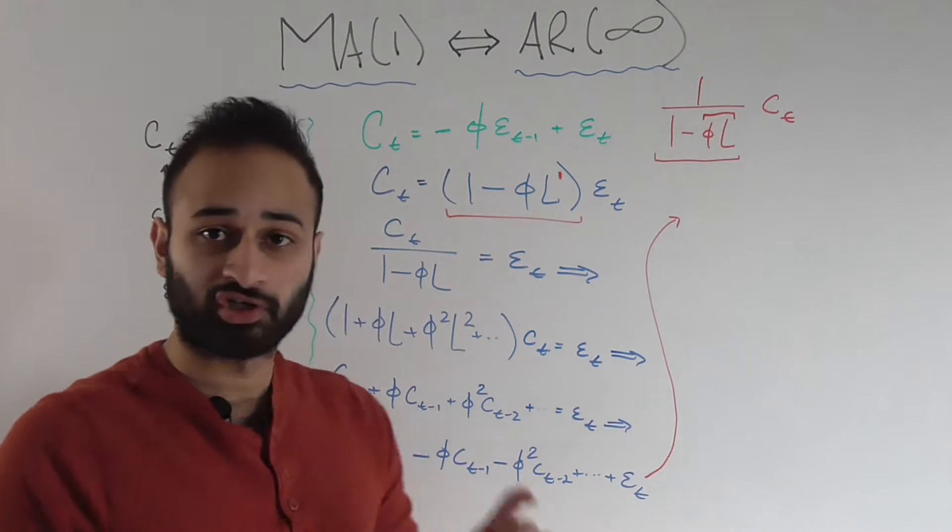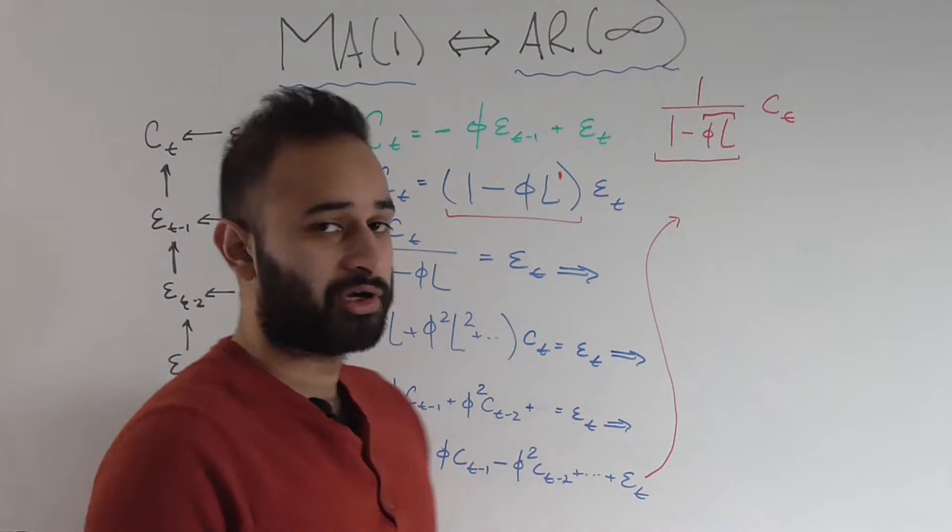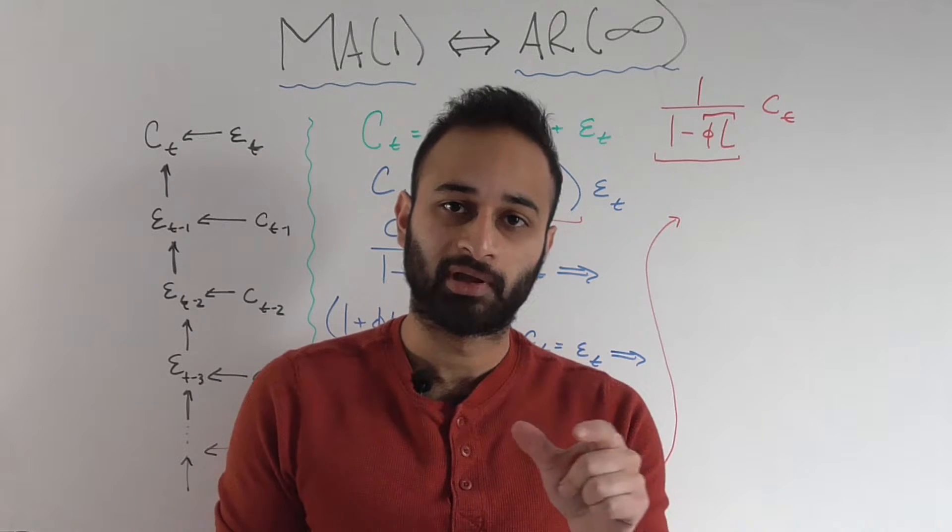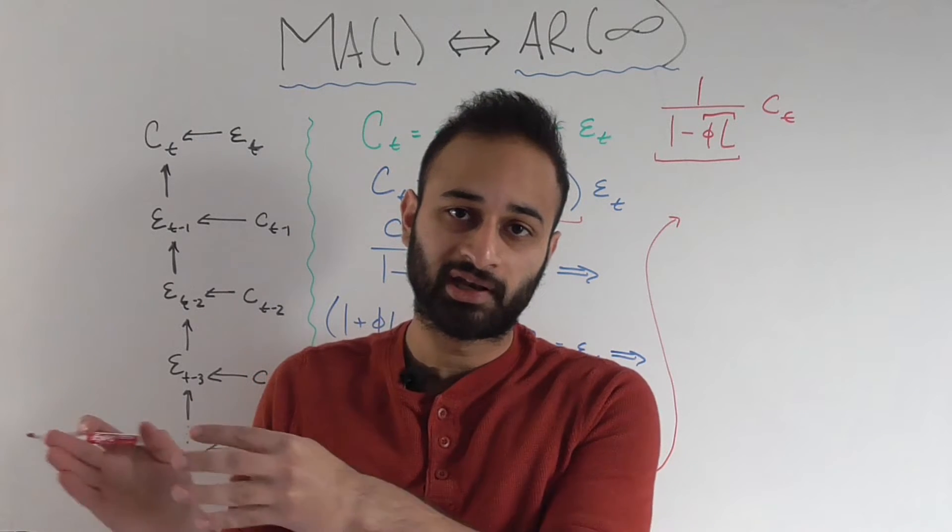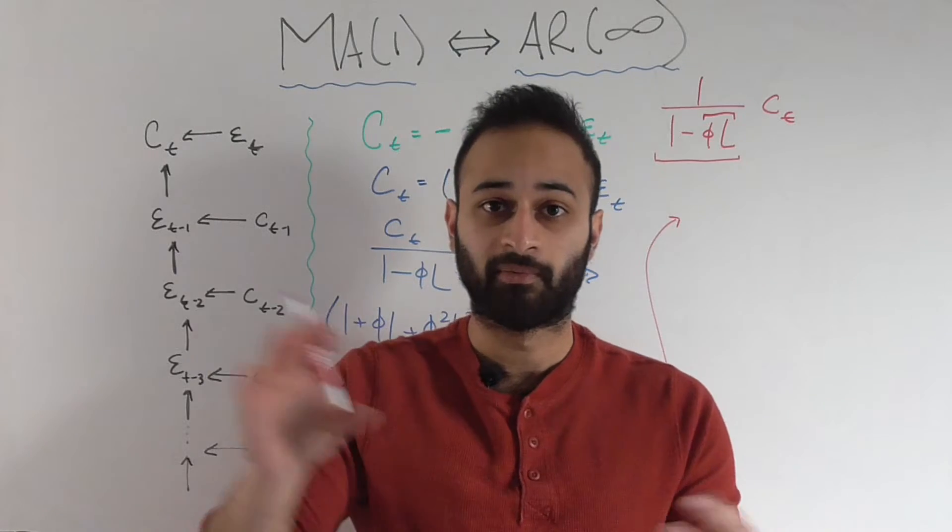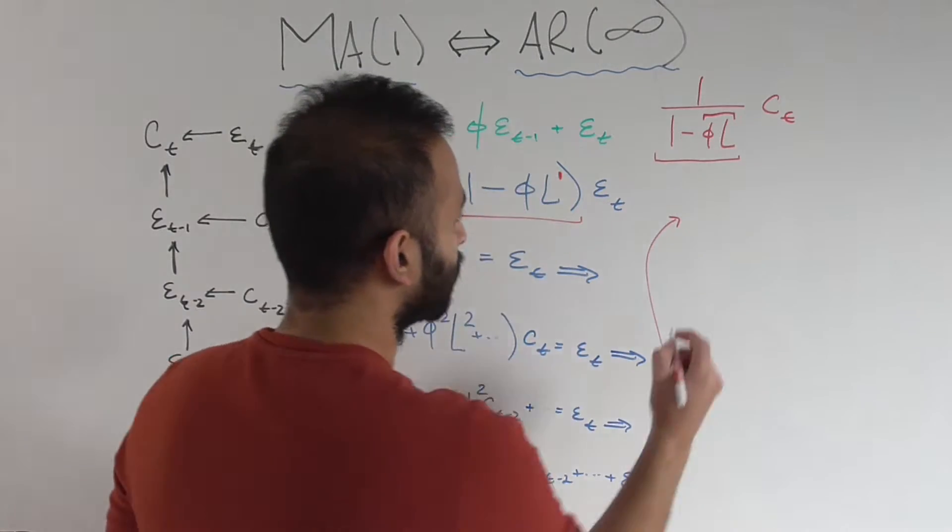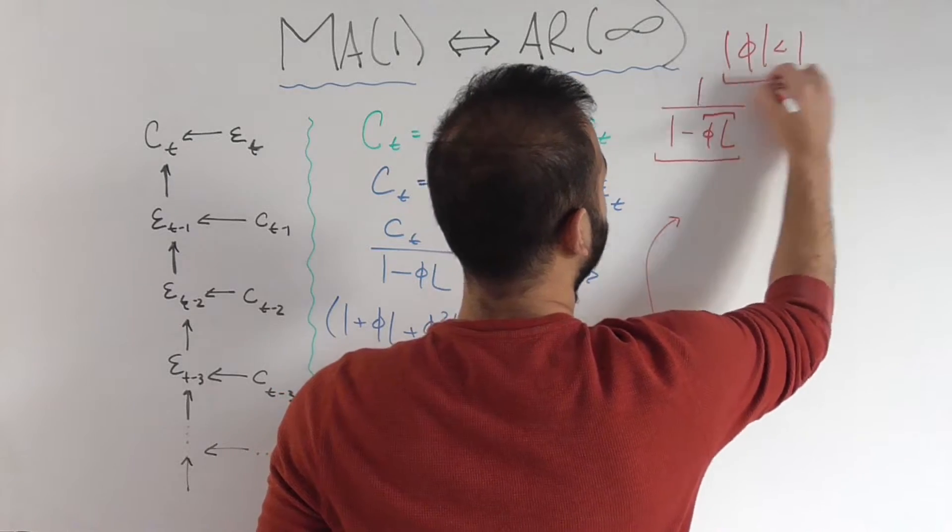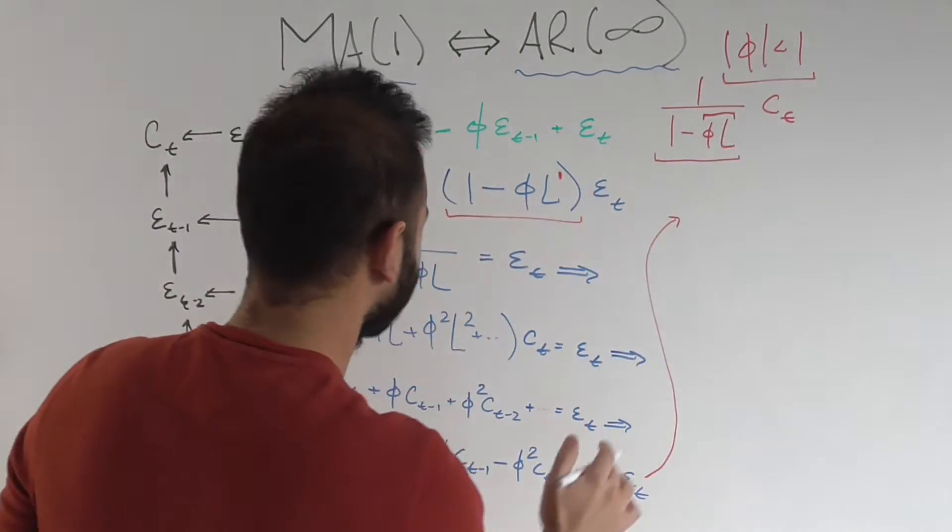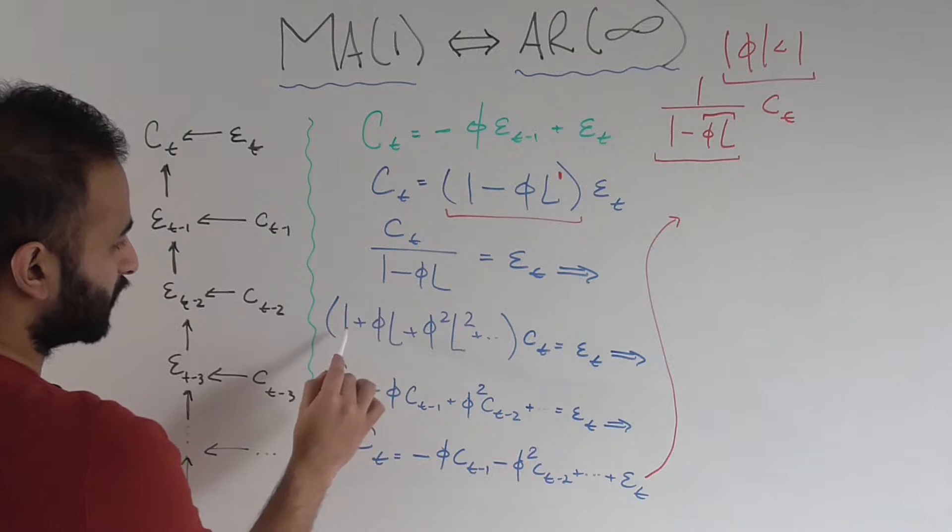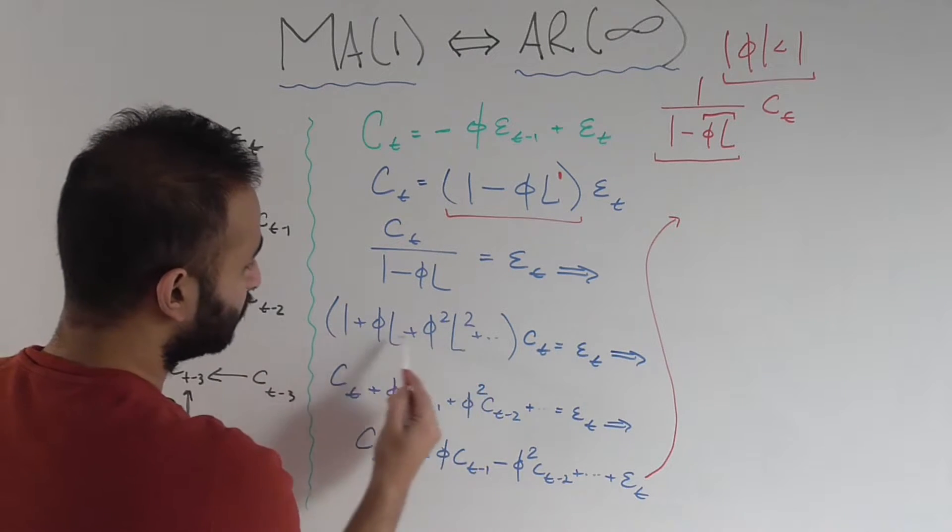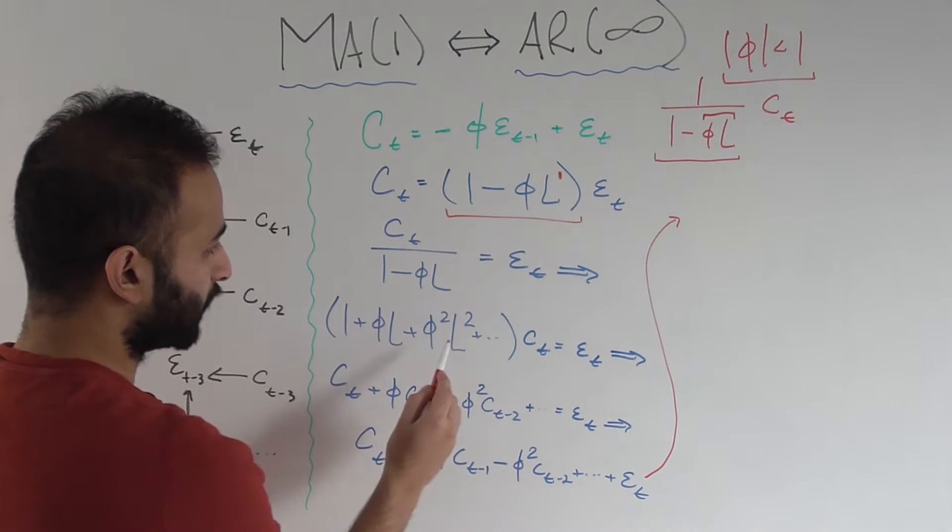So we have 1 over 1 minus phi times L, so the common ratio is phi L. Of course there is a restriction here. We need the common ratio's absolute value to be less than 1, because a geometric series only converges if each term is progressively smaller in absolute value. It'll diverge if they're bigger and bigger, obviously. So we require that phi is less than 1 for this all to work out.